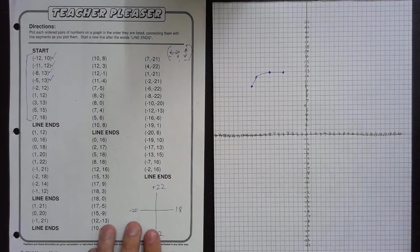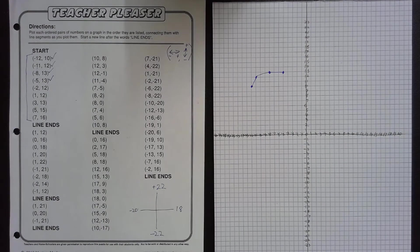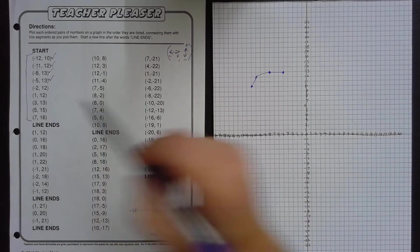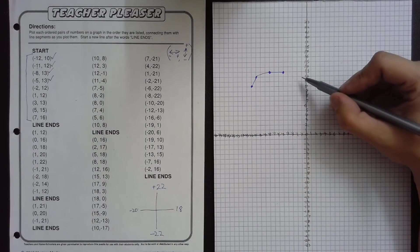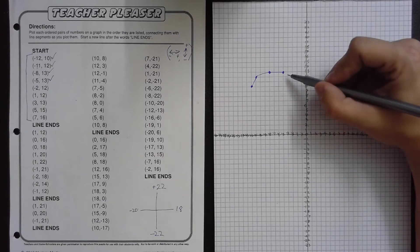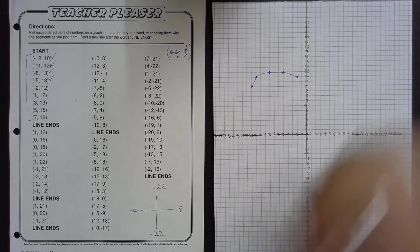2 left. Sorry, that was a little loud. Still at the school, and they're making announcements. Anyways, negative 2, 12. 2 left, 12 up. That's right here.